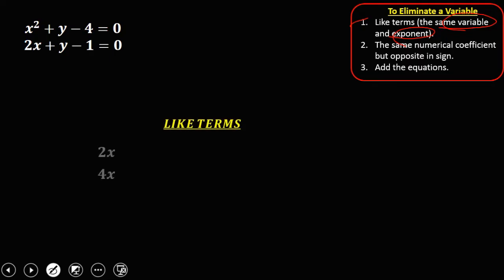So example of like terms, that's 2x and 4x, negative 3y squared and y squared, and 2xy and negative 5xy. So these are like terms, the same variable and also the same exponent.